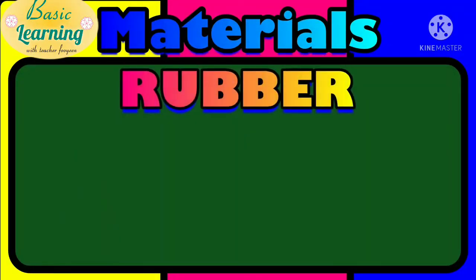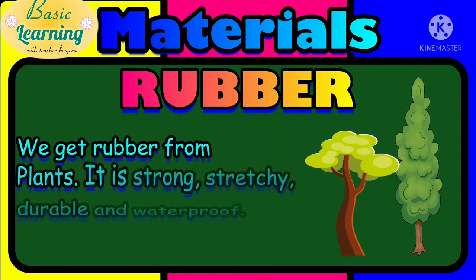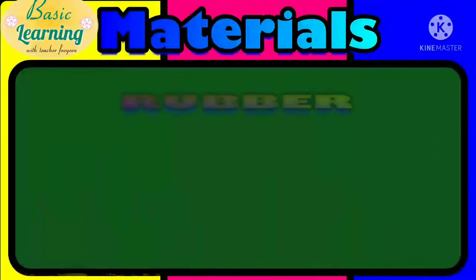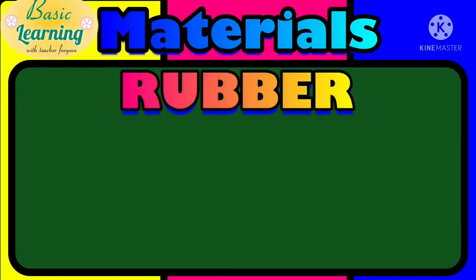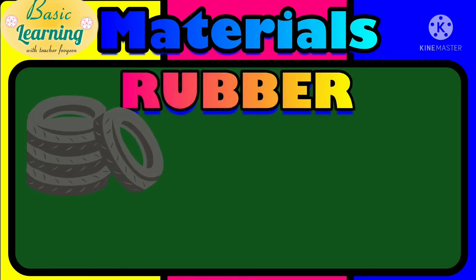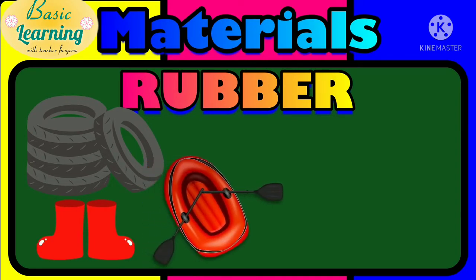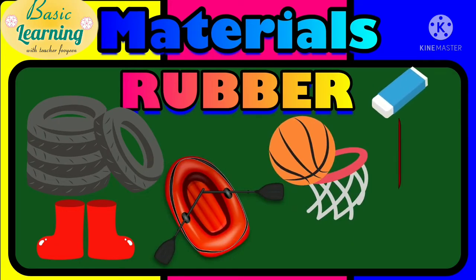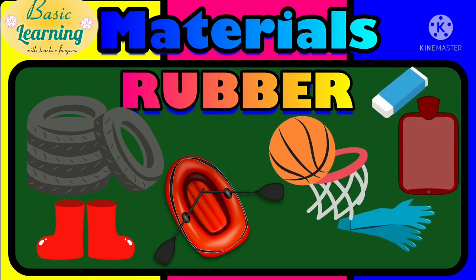The fourth important type of material used in our everyday life is rubber. We get rubber from plants. It is strong, stretchy, durable, and waterproof. Here are some examples of things made of rubber: tyres or wheels of the car, boots, canoe boots, basketball, erasers, hot water bag, and gloves. All are made with rubber.